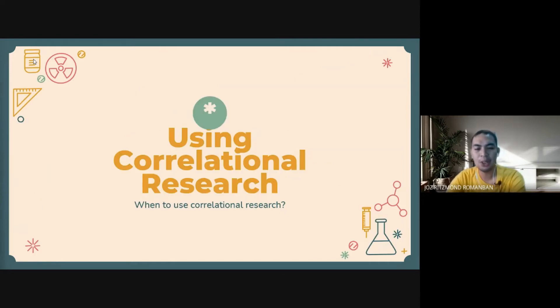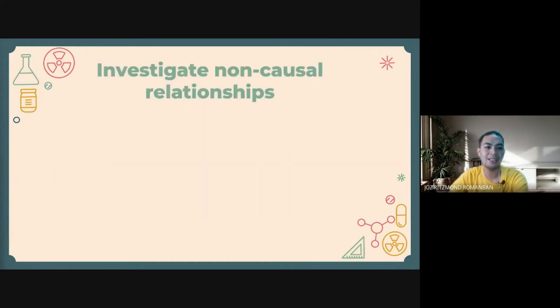Now, when are we going to use correlational research? Here are the things that we have to consider. First, to investigate non-causal relationships. We want to find out if there is any association between two variables without expecting to find a causal relationship between them.